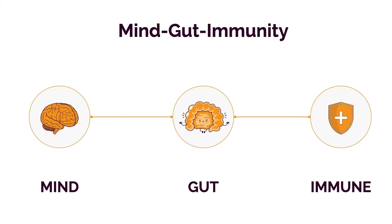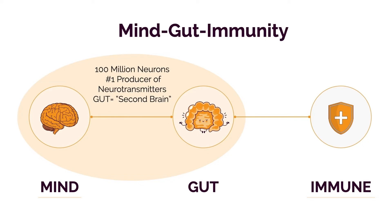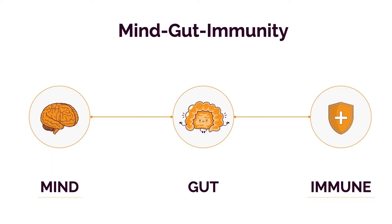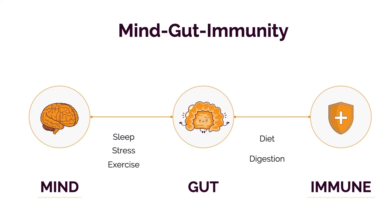The gut contains 100 million neurons and is the largest producer of neurotransmitters in the body — that's why it's earned the nickname 'the second brain.' It's also host to one trillion immune cells, which means a majority of your immune system is actually housed in the gut. If I had to assign percentages, diet is roughly a third and digestion is roughly a third — combined, more than half the impact — because most of your immune system and most of your genetic diversity in the form of microbes is in your gut.